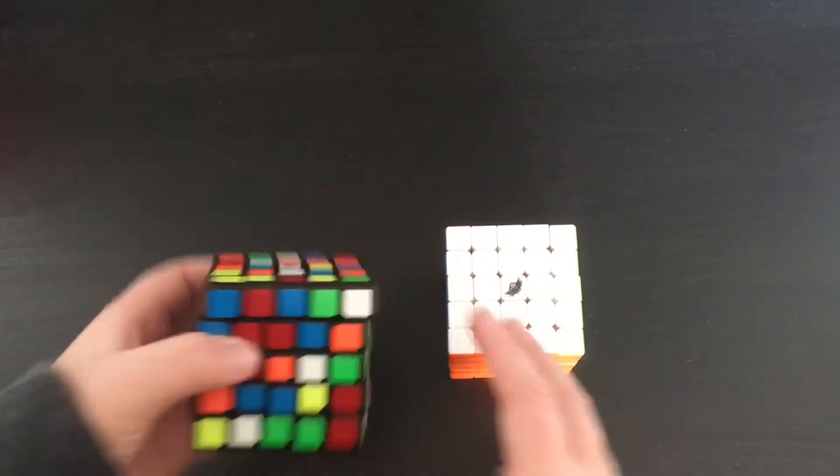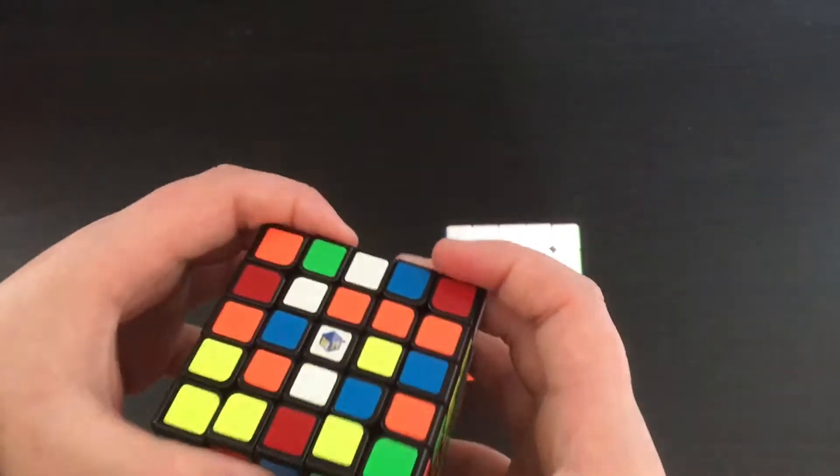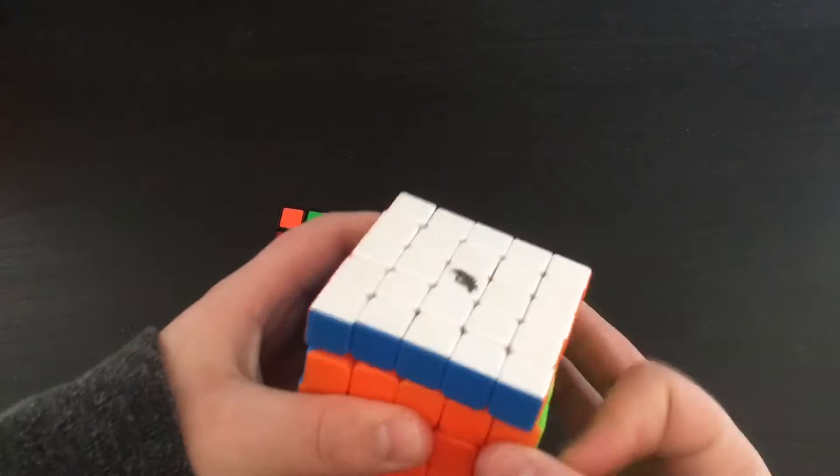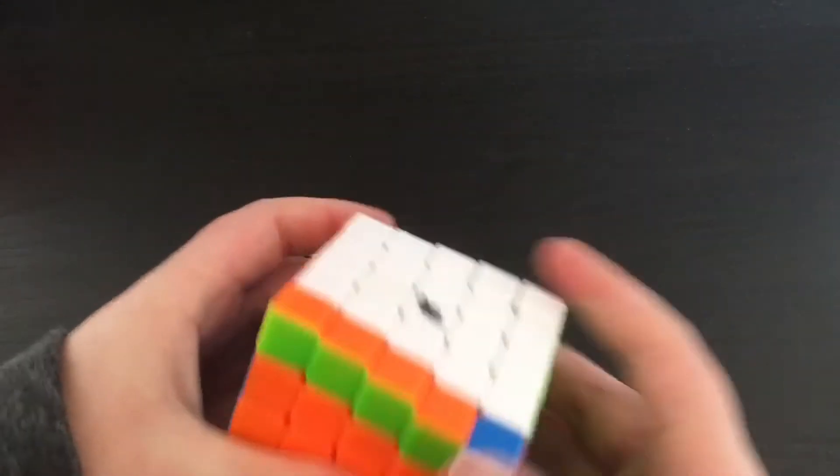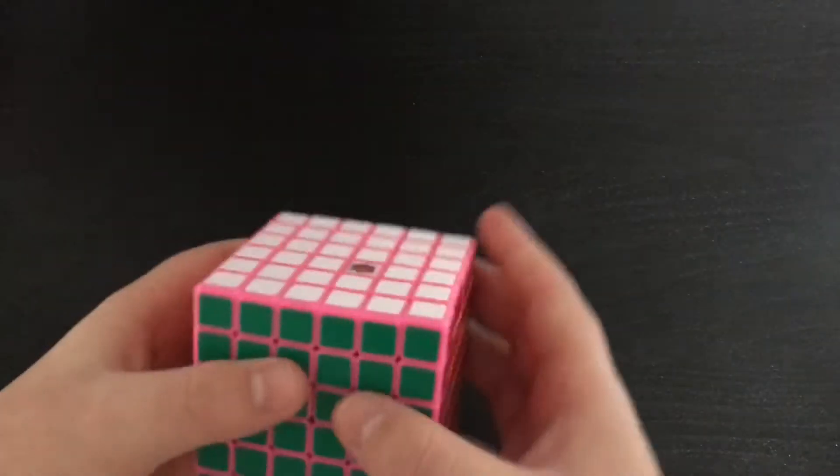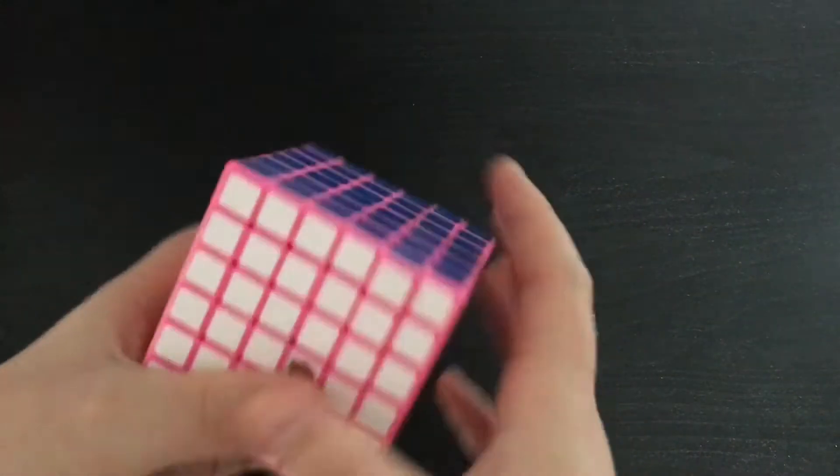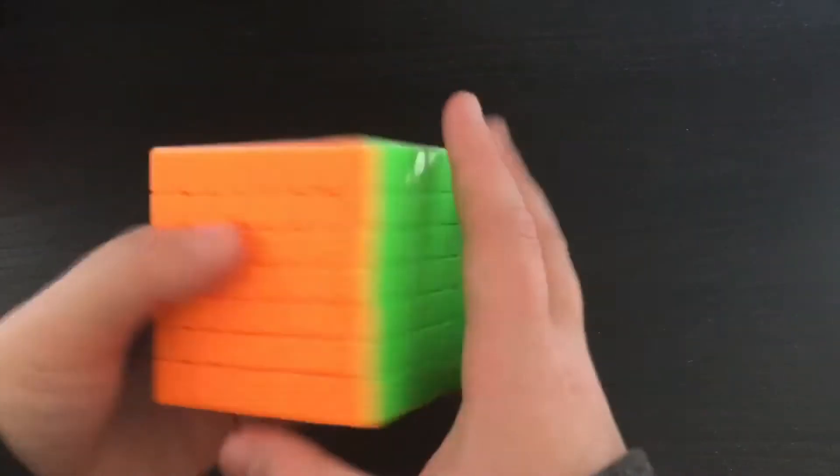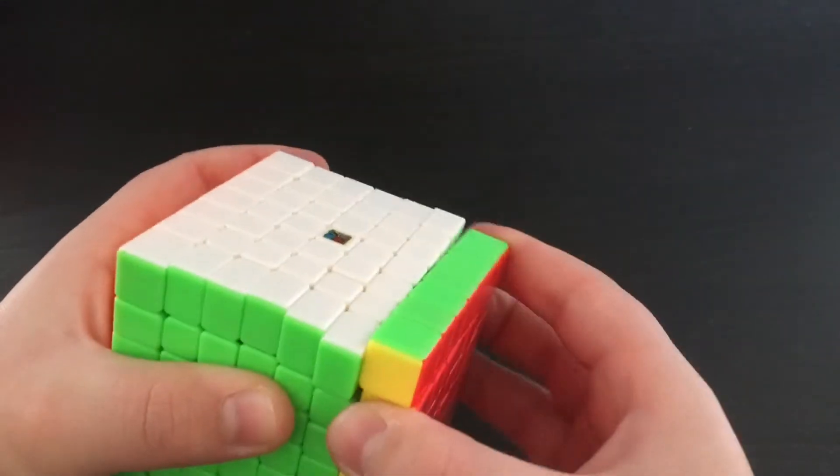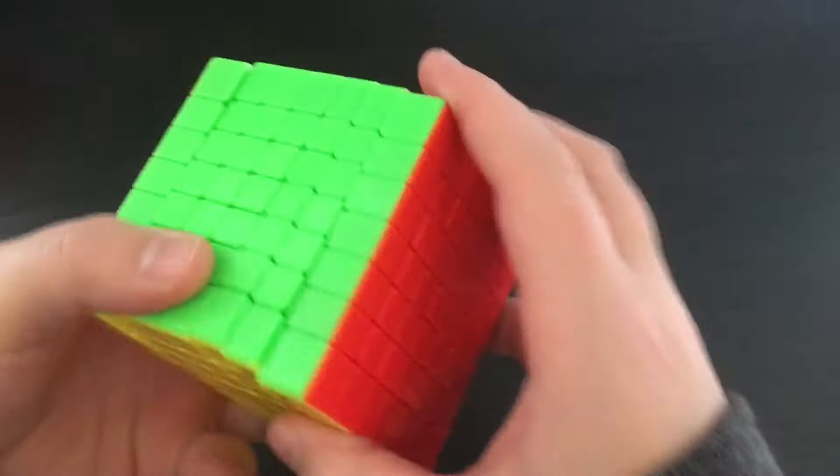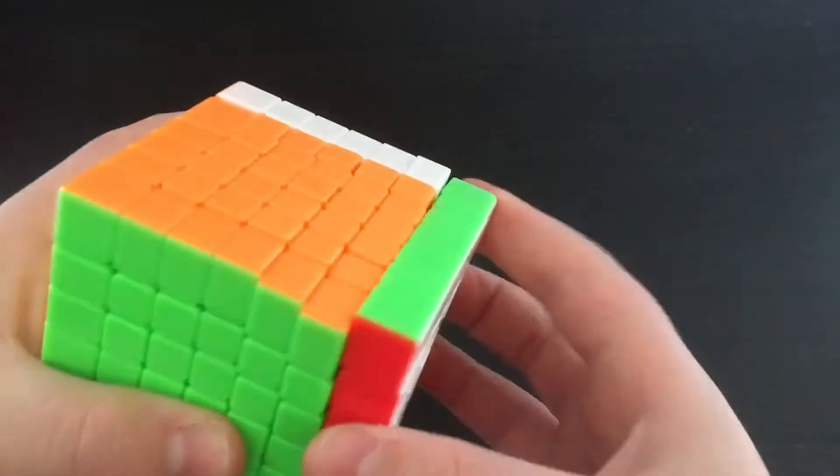I have two 5x5s. I have a Yushin 5x5 in black and I have a Cyclone Boys 5x5 in stickers which is my main 5x5. I also only have one 6x6 right now and this is a Shenzhou 6x6 with pink plastic. I have one 7x7, and this is the MX7S, a newer 7x7 that just came out.